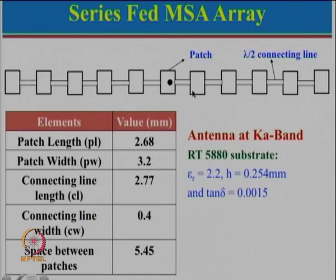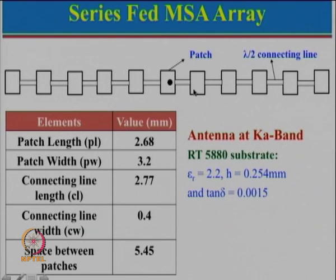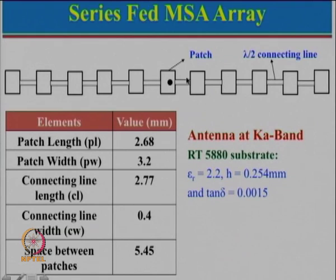Consider this configuration: if the connecting line width is very large, the whole structure looks like one big patch. If the characteristic impedance is high, the width is small, causing more fringing field. If the width is larger, there will be less fringing field. Because of this, the connecting line adds loading to the patch.